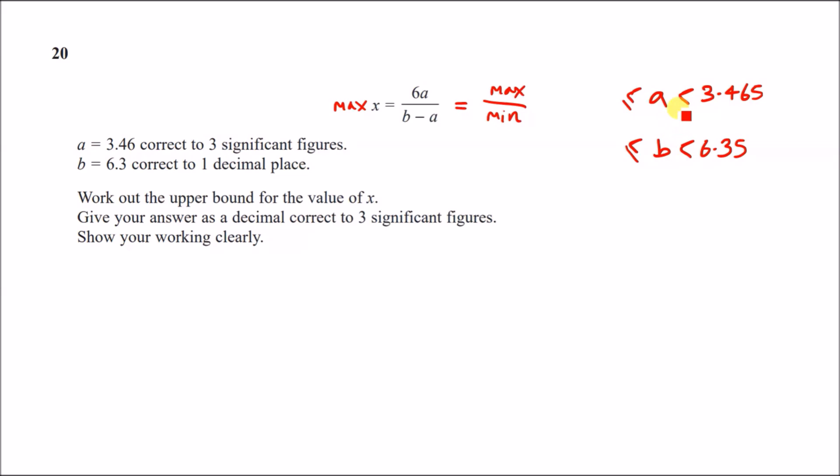Now, how do we maximize 6a? Well, we need to find an upper bound for 6a. So we need to find an upper bound for a. So let's just do our bounds for a and b first before anything else. So I always write 3.46 here and 6.3 here, and then I just add a 5 to both of them. So 5 and 5. So this tells us that for a to be true, to be rounded down to 3.46, it has to be just less than 3.465.